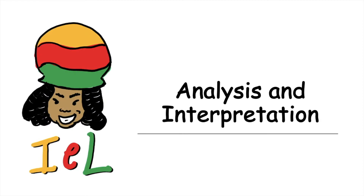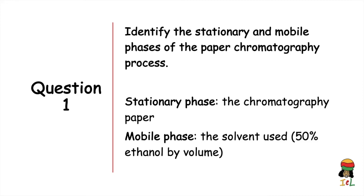In the analysis and interpretation of results from our paper chromatography experiment we will answer three questions. Question one: identify the stationary and mobile phases. The stationary phase is the chromatography paper, which is the absorbent paper, and the mobile phase is the solvent — for this experiment, 50% ethanol by volume.